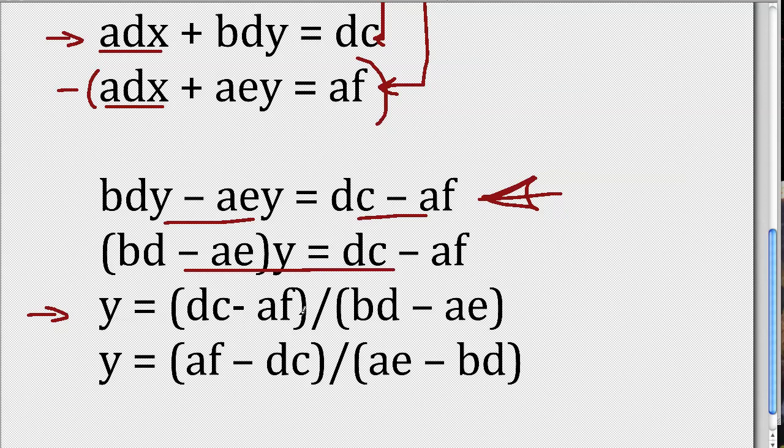Now notice, by the way, that I can flip the numerator here, where it's DC minus AF, write it as AF minus DC, and flip the denominator, here it's BD minus AE, and rewrite it as AE minus BD. Because this is the same thing as multiplying the numerator by negative one, and the denominator by negative one, just flipping them.